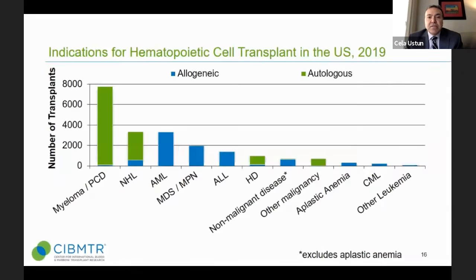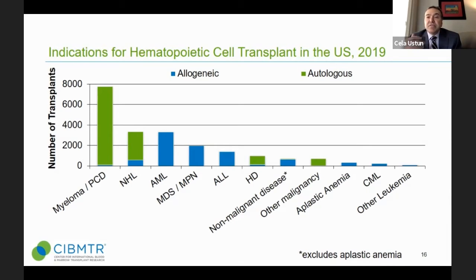This chart shows indications for transplantation. MDS is quite high — around 2,000 patients in 2019 received transplantation for MDS or MPN, myeloproliferative neoplasm. Aplastic anemia is a rarer disease, so a smaller number of patients receive transplantation for that condition.